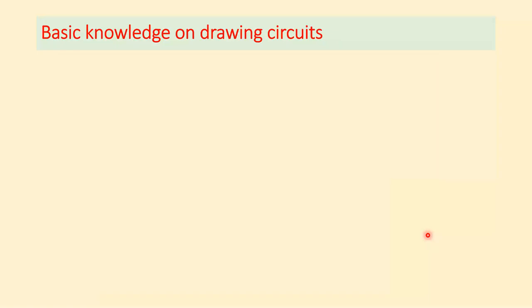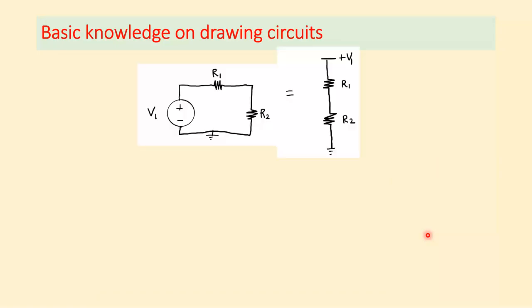More background knowledge on drawing circuits. Sometimes circuits are drawn as a complete loop with a ground symbol. But sometimes circuits are drawn with just a line at the top labeled with the voltage value V1, and the bottom goes to ground — many simulators use this style.